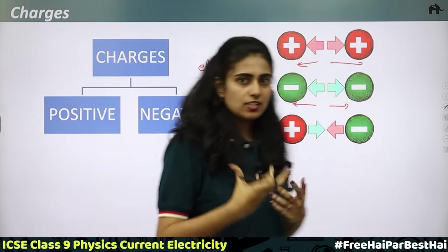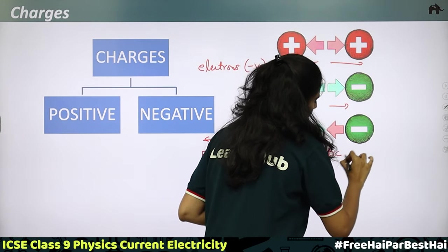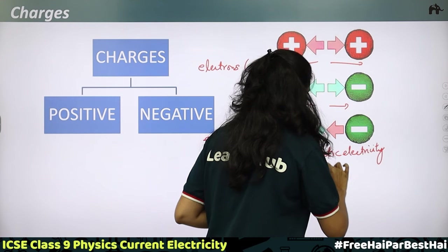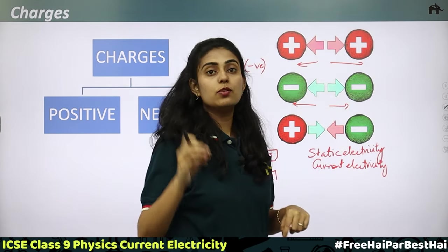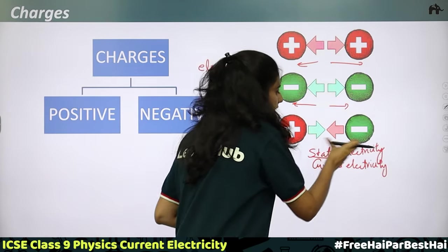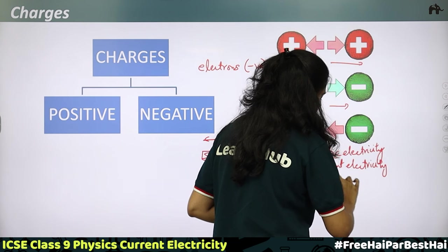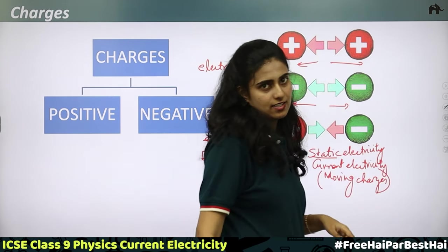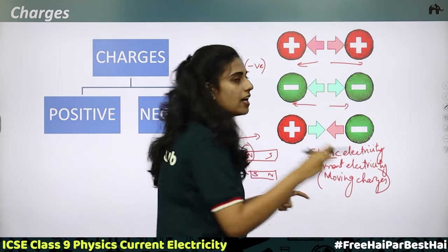Based on charges, there are two types of electricity. The first one is static electricity, where electrons are at rest. The second one, which we are going to discuss in this chapter, is current electricity. Current electricity is because of the motion of electrons — moving charges. In this chapter, we will be discussing current electricity, in which the charges are in motion.